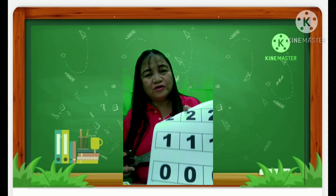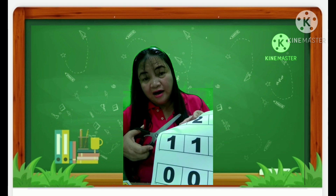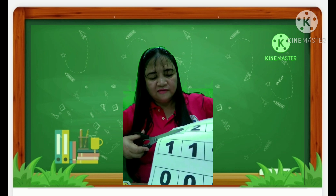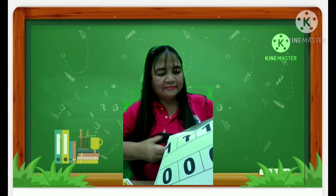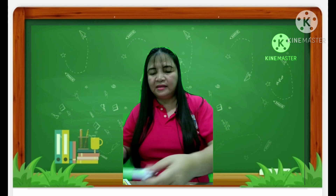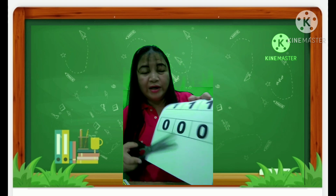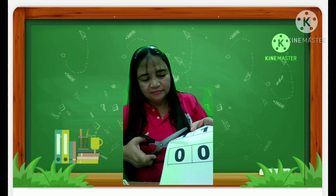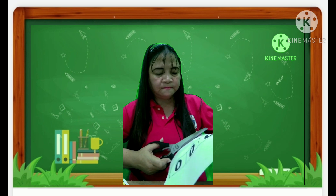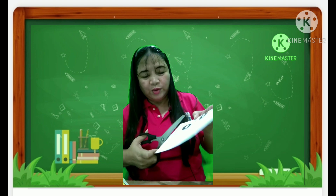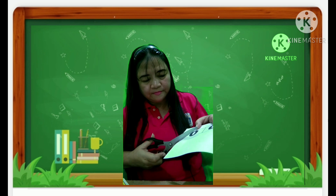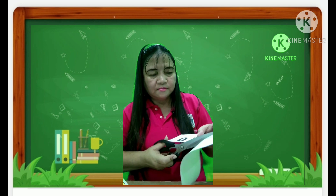And we have 2. We have the arrow there — follow it and cut it straight. Set aside. Then we have the 1. Set aside. And then we have the last, which is the zeros. Okay, now we are done.